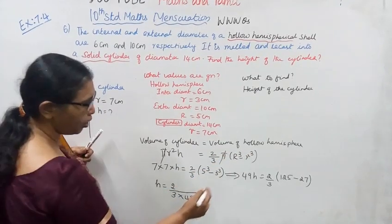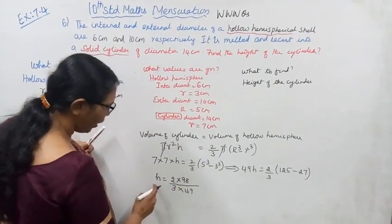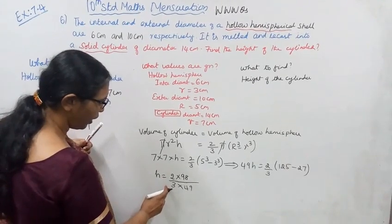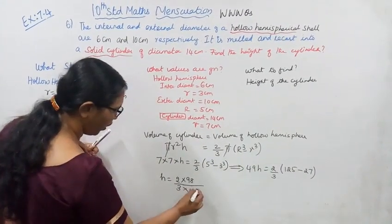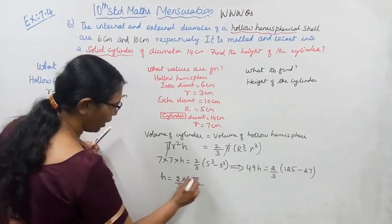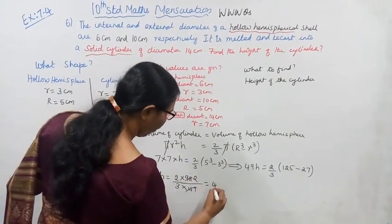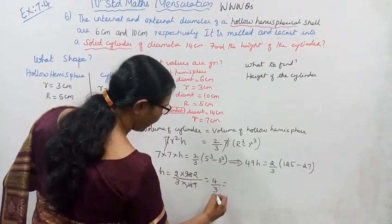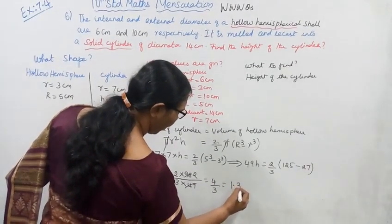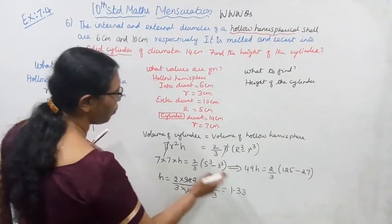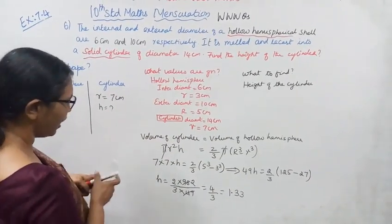125 minus 27 equals 98. Now we have 2 by 3 into 98, divided by 49. 49 into 2 is 98. So 2 by 3 into 98 over 49 gives us 4 by 3. 4 divided by 3 equals 1.33. Therefore h equals 1.33. It is the height of the cylinder.